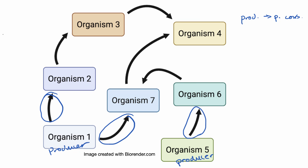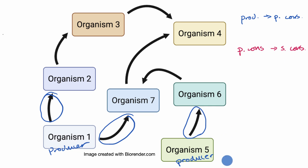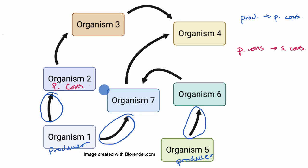Now, which arrows show us going from a primary consumer to a secondary consumer? Pause the video and think about that. These things that are consuming the producers are primary consumers — I'll just say P for primary. This is a primary consumer, and this is a primary consumer as well.